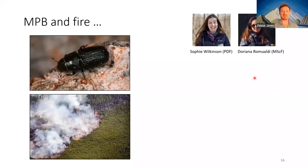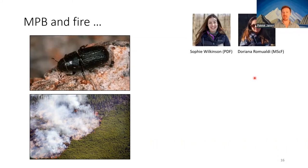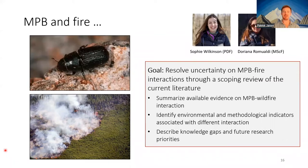This is work undertaken by Sophie Wilkinson, a postdoc in the lab, and Dorianna Romaldi, a master's student. They set out with the initial goal of trying to resolve some of the uncertainty in mountain pine beetle-fire interactions as described in the literature — combing through the published literature to find all papers looking at mountain pine beetle and fire, summarizing the evidence, and trying to model what factors determine the probability of finding a positive, negative, or neutral result.